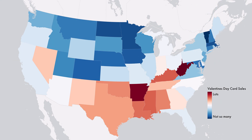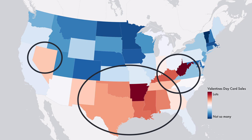For example, here's a fake map of Valentine's Day card sales. In addition to all of the negative things I just talked about, red also reminds people of love and romance. It has contradictory connotations — I just need to make sure that love wins out over danger. Right now, danger is winning. This map is giving the impression that these areas are somehow bad or at risk.